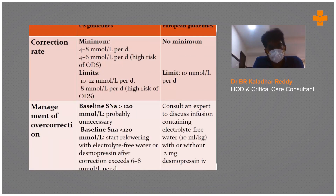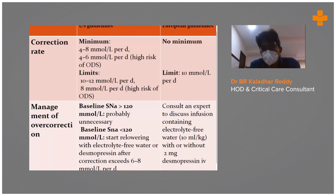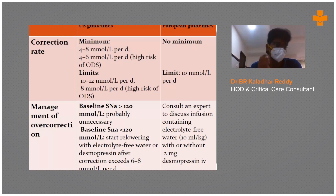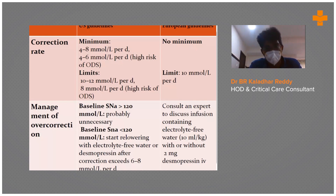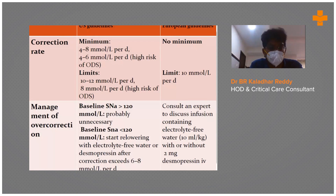To easily remember how to correct hyponatremia by around 10 to 12 milliequivalents per liter: use the patient's body weight multiplied by total body water and the sodium difference. For a 60 kg patient, give 3% NS at 30 ml per hour; for an 80 kg patient, up to 40 ml per hour. An easy rule: give half the patient's body weight in ml per hour of 3% NS to correct sodium by 10 to 12 mmol/L/day.